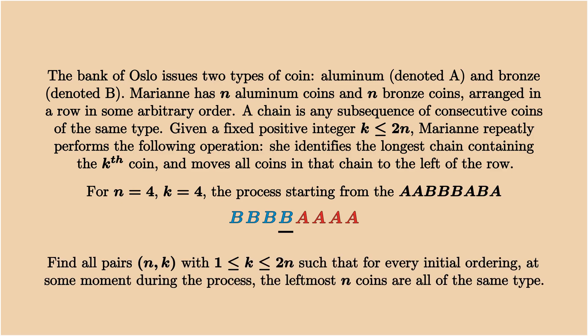The question is to find all pairs n and k, such that for every initial ordering, the left n coins are all of the same type at some point during the process. If you would like to think about the problem, pause the video here. The solution is coming right away.